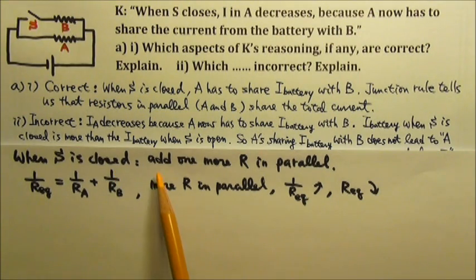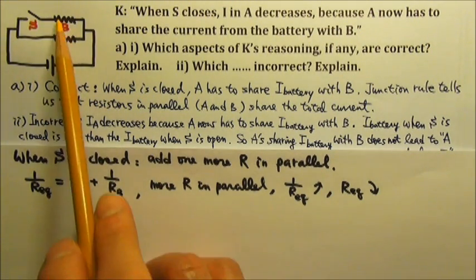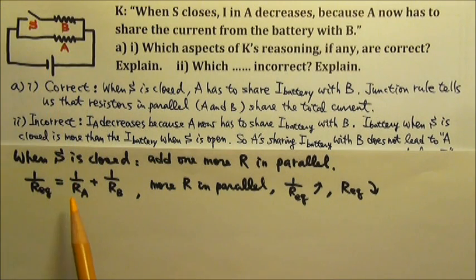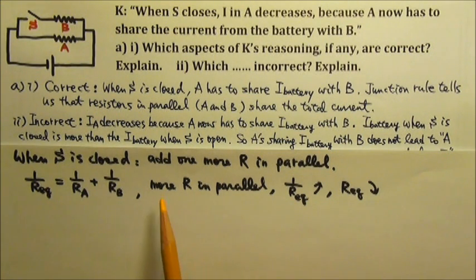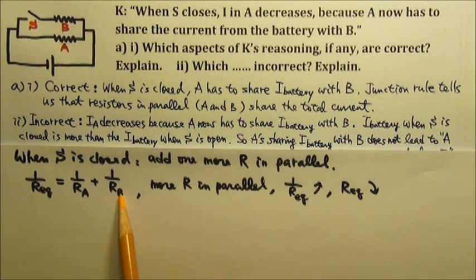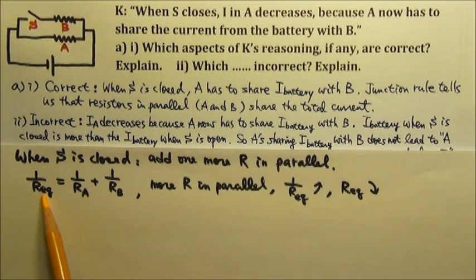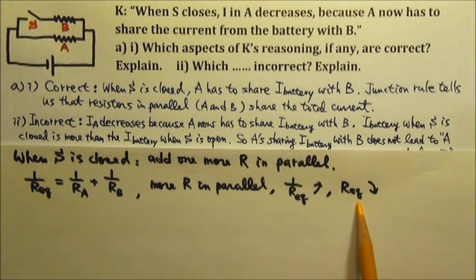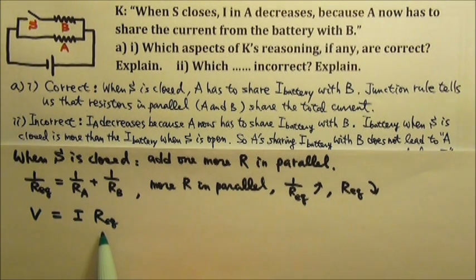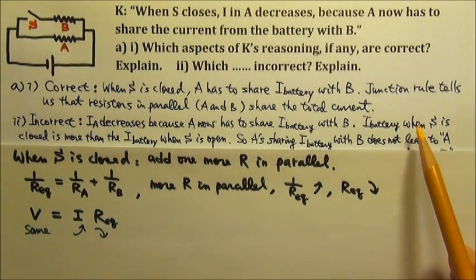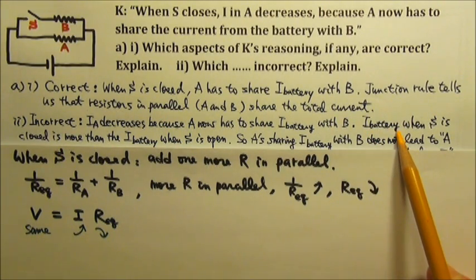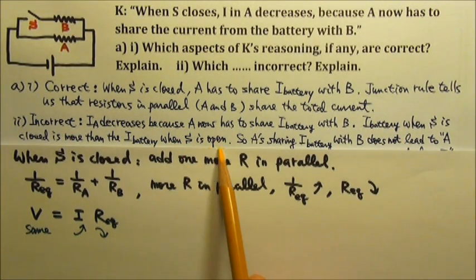When we close the switch, we're adding one more resistor in parallel with A. Because of the 1-over equation for finding equivalent resistance for resistors in parallel, the more resistors we have in parallel, the bigger the 1/R_equivalent, and therefore the smaller the equivalent resistance. Since V equals IR and the battery's voltage stays the same, when the equivalent resistance decreases, the current through the battery increases. So when the switch is closed, the battery's current is more than when the switch is open.